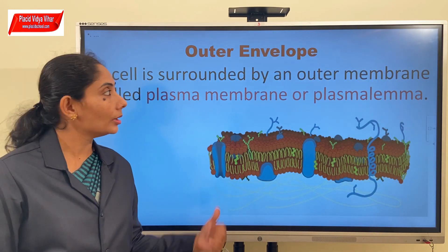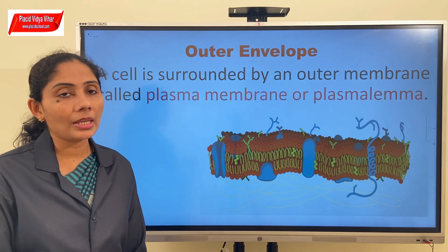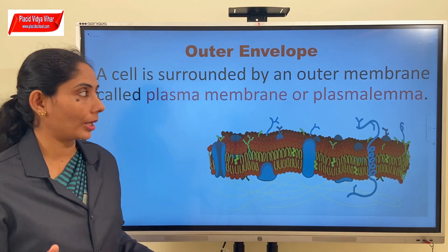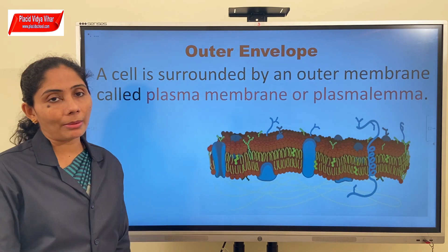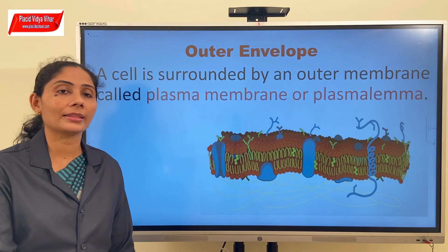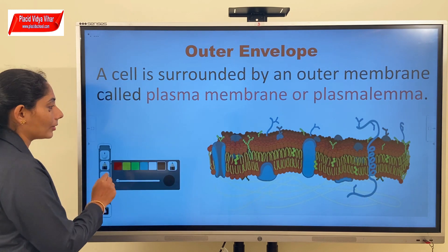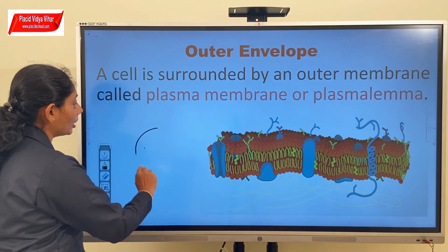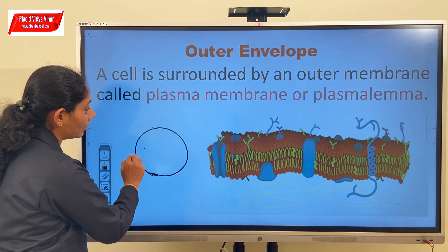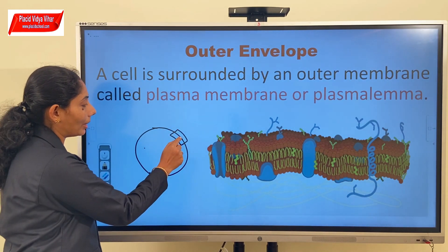Let us take each one step by step. The first one is the outer envelope. Each and every cell would be having an outer envelope - a covering, a boundary. That outer membrane is referred to as the plasma membrane, or the plasmalemma, also referred to as the cell membrane. Now if I draw a cell, whenever we draw a cell we always make a boundary line. This boundary represents the plasma membrane.